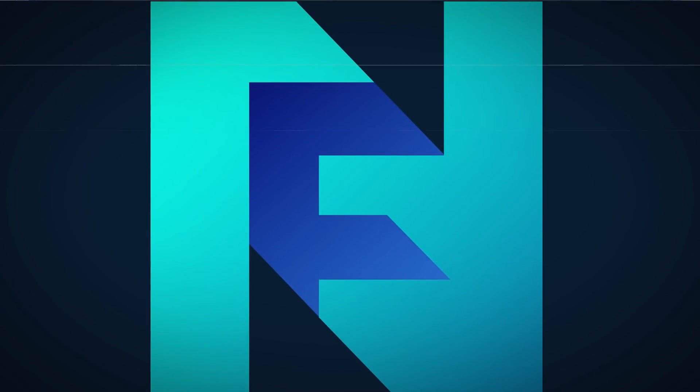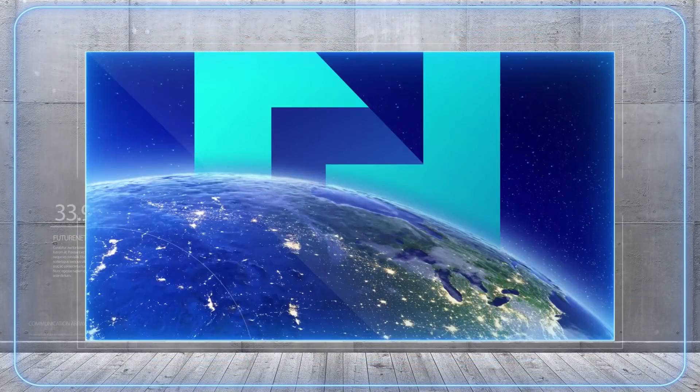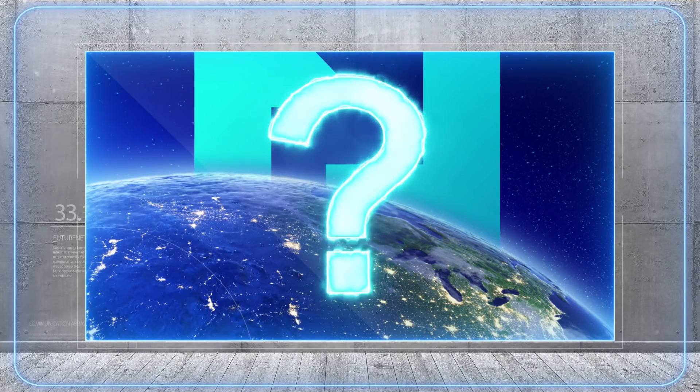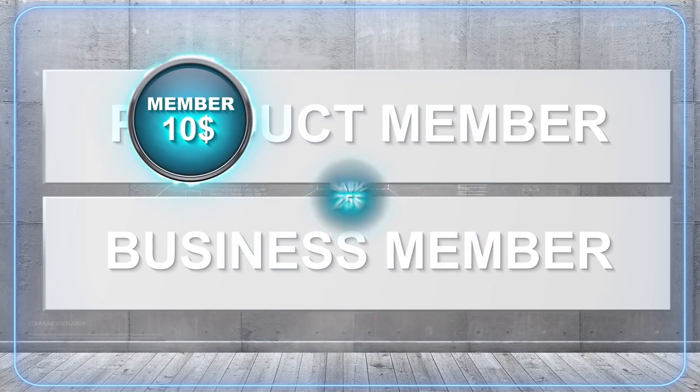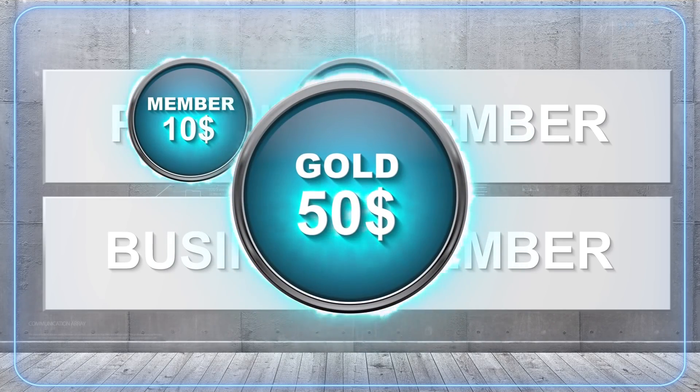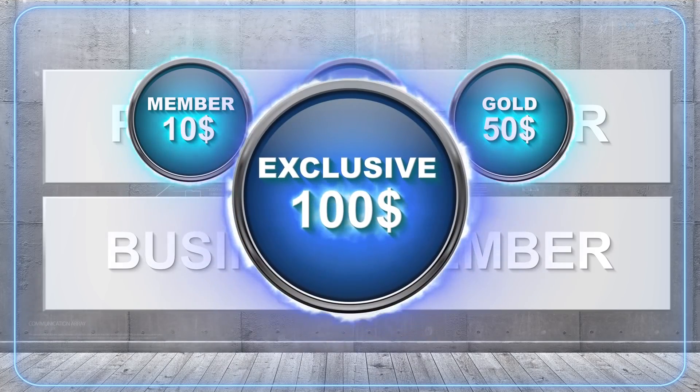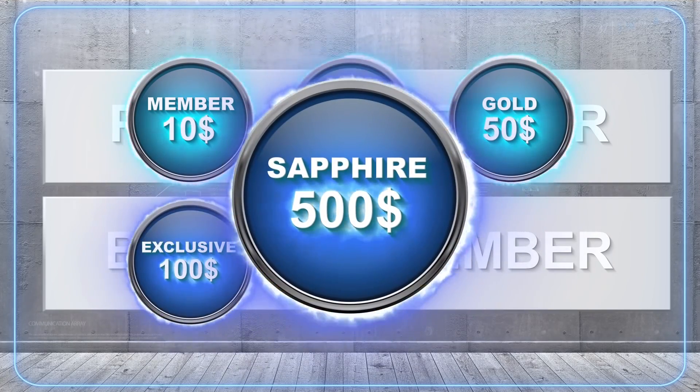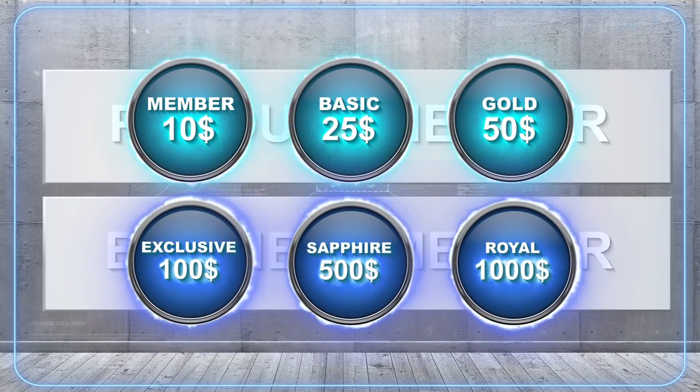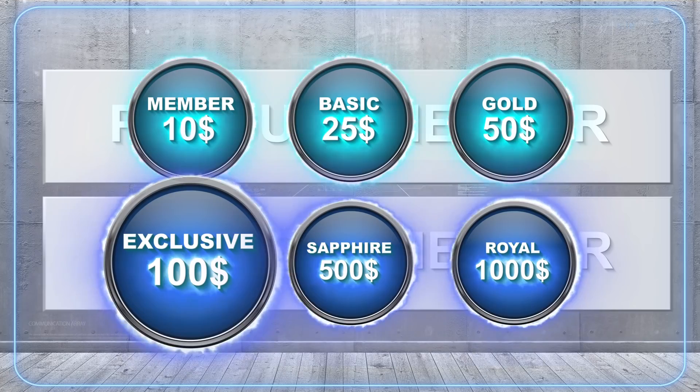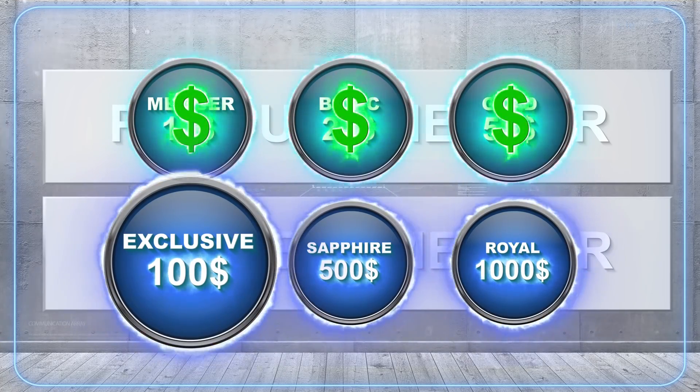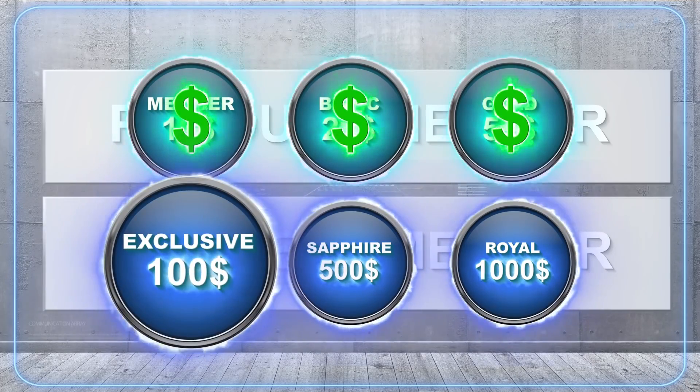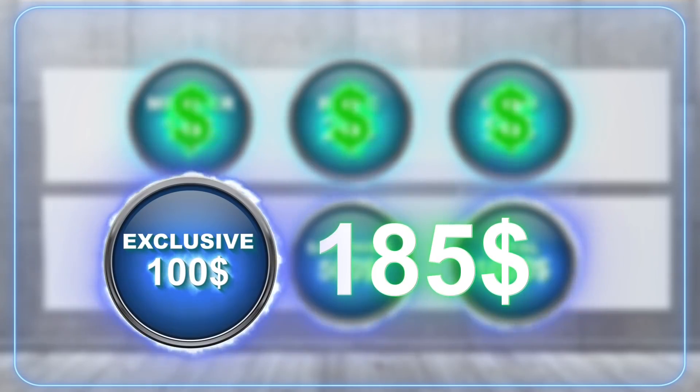What are the possibilities of starting your own business with FutureNet? Six options divided into two levels of activity are available. Basic level: Member $10, Basic $25, Gold $50. Business level: Exclusive $100, Sapphire $500, Royal $1000. To hold exclusive level, you have to purchase earlier the product at the levels Member, Basic, and Gold. This means that as a business partner at the exclusive level, you start from the purchase at the level of $185.